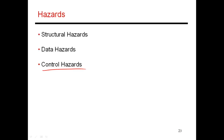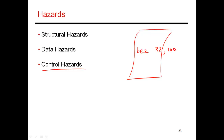If you look at your program, you will frequently encounter a branch. Let's say the branch does 'branch and equal to 0 R2 comma 100'. What this does is check to see if R2 is 0. If R2 is 0, I jump to a location 100 bytes away. If R2 is not equal to 0, I'll start fetching the next set of sequential instructions.